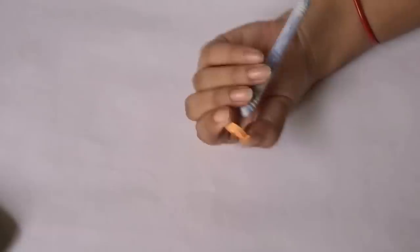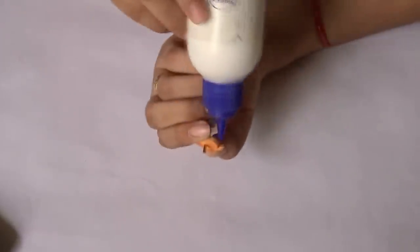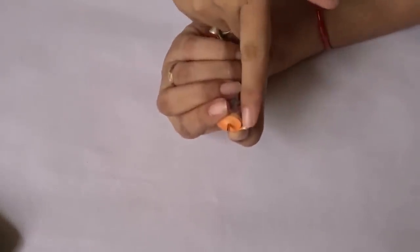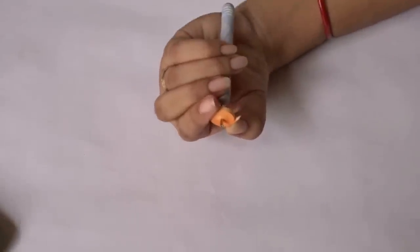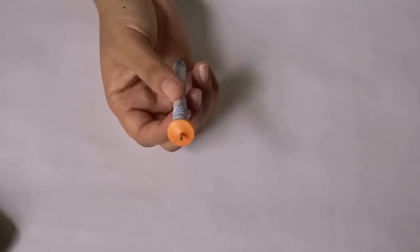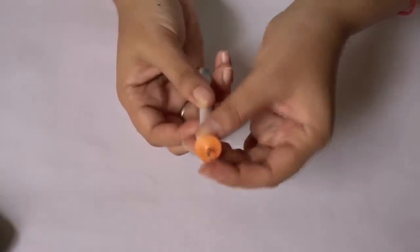Now apply some glue here to secure it. Remove the excess glue, then gently remove it from the rolling pin.